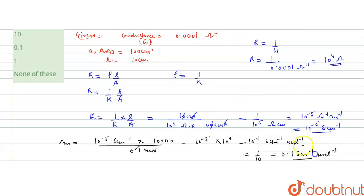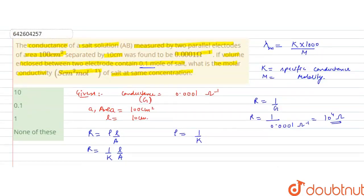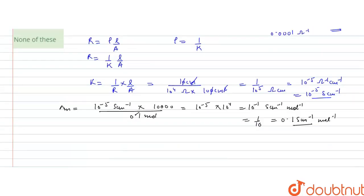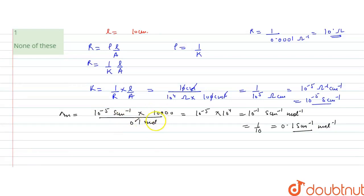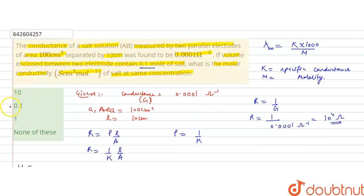So the molar conductivity is 0.1 Siemens cm² per mol. Note that molarity is in mol per litre, and 1 litre is represented as cm³ in volume form, so when it moves to the numerator it contributes cm³, giving units of Siemens cm² per mol. The molar conductivity is 0.1 Siemens cm² per mol, so the correct answer is option B.